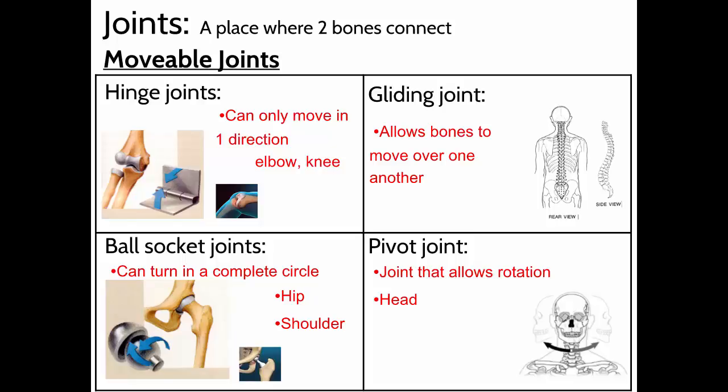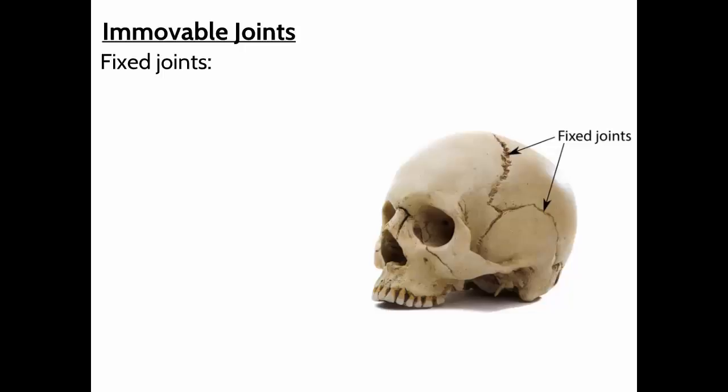There's also a type of joint that does not allow movement — an immovable joint. You find these in the sternum and in the cranium. Your skull is made of several bones that meet, and those are fixed joints where the bones don't move independently of each other — they fuse together. That's called an immovable joint.